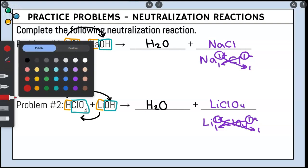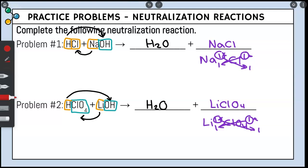The last thing we do is determine states — solid, liquid, gas, or aqueous. Water is always symbolized as a liquid. For the compounds we cross-charged, we use solubility rules. NaCl — Na is soluble, so this whole compound is aqueous. LiClO4 — Li is soluble according to our solubility rules, so this whole compound is also aqueous. And that is how you do neutralization reactions.